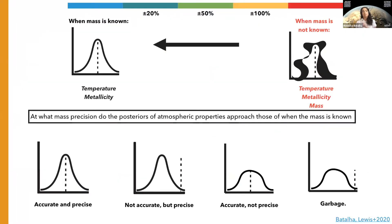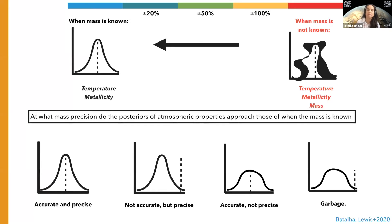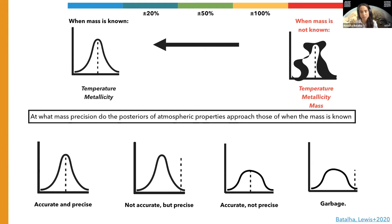We then ran a Bayesian retrieval analysis to determine what the constraints on atmospheric parameters were when the prior on the mass was super large — so the mass wasn't known at all — and then slowly increased the precision on mass until the posteriors of the atmospheric properties approached that of when mass was known infinitely well. In doing so, we tracked both the accuracy and the precision of the posteriors on atmospheric parameters like temperature, metallicity, and mass, and tracked how those degraded.